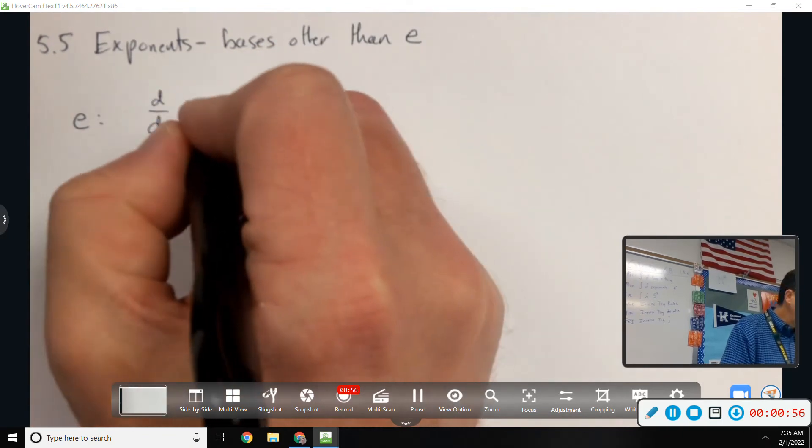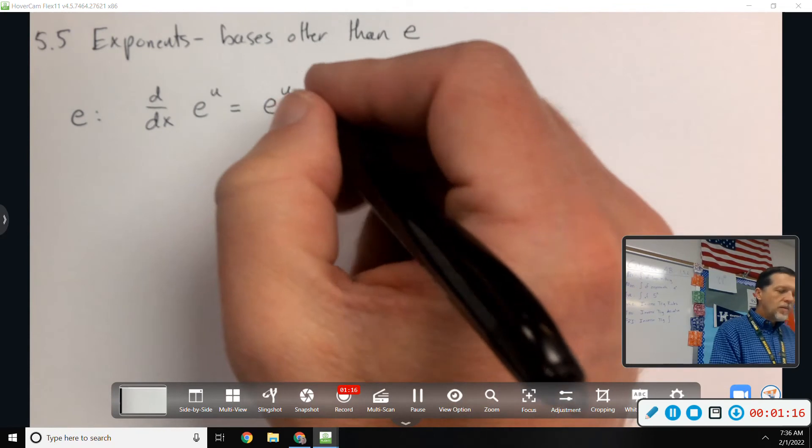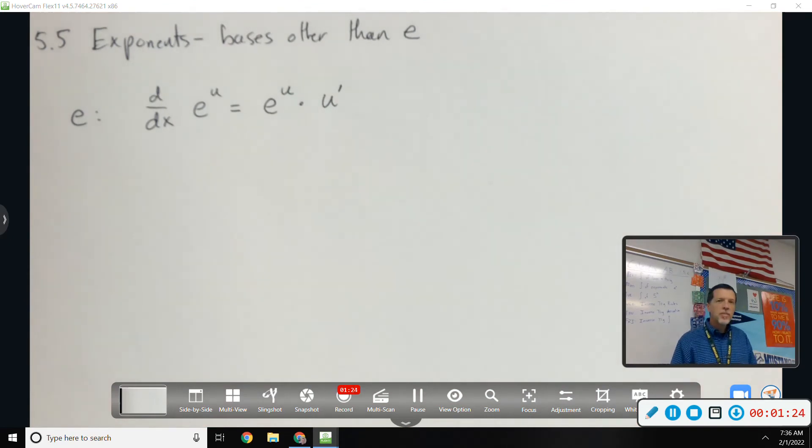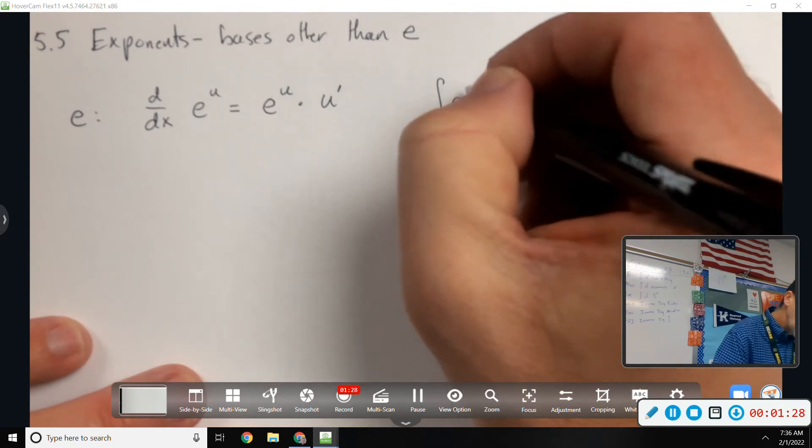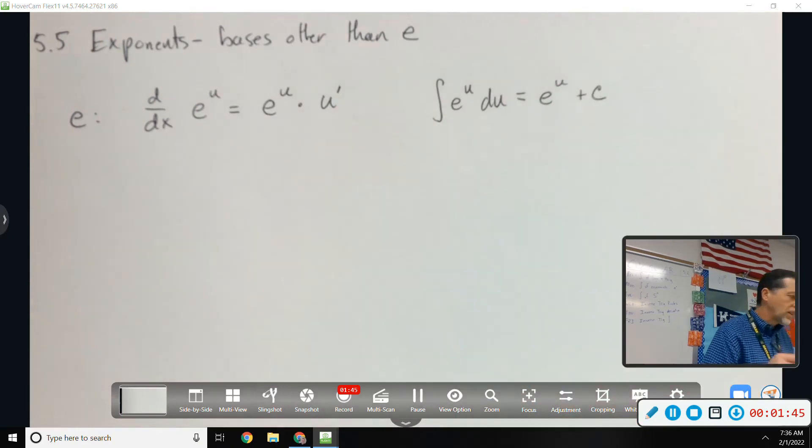Let's quickly review the E stuff. So this is old news. The derivative of E to the U is E to the U times U prime, or DU DX, however you want to phrase it. Orange triangle, derivative of the orange triangle. And the integral of E to the U. This is what we did yesterday. The anti-derivative of E to the U is E to the U, with the plus C on the end.